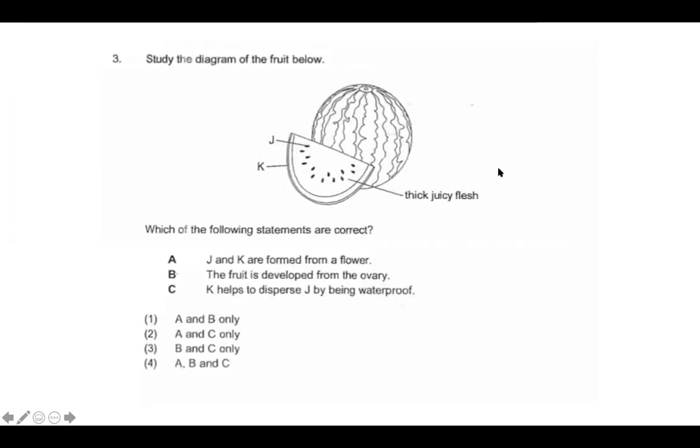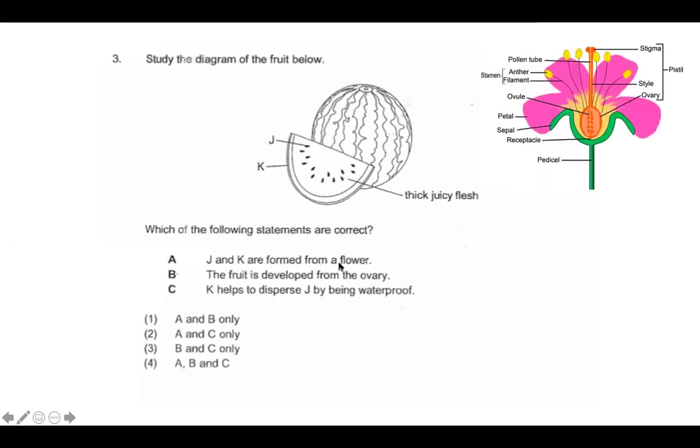Okay, let's look at the diagram. So we have fruit, we have the seeds, we have the outer casing of the fruit. J and K are formed from a flower. Let's look at this diagram of a flower. You don't have to focus on all the labels, but we know that the fruit and the seeds come from the ovary and ovule, so that's correct. The fruit is developed from the ovary, that is correct. And for option C, K helps to disperse J, which are the seeds, by being waterproof. Well, if we think about dispersing J, we want the seeds to spread out, and we don't want them to be trapped. And so K being waterproof, it doesn't really affect that. So the answer is A and B, so one.